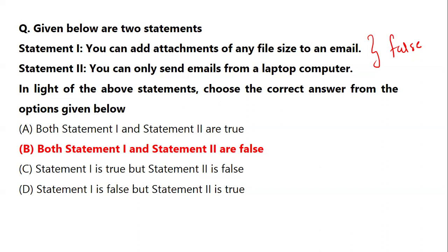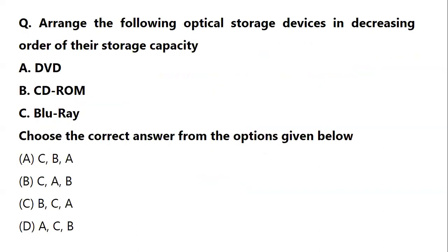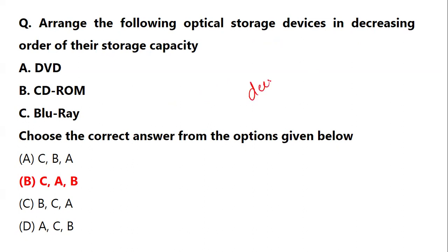Next: arrange the optical storage devices in decreasing order of storage capacity. Storage capacity questions are very important. You have to be clear whether the question asks for decreasing or increasing order. Going with decreasing order, it is Blu-ray, followed by DVD, followed by CD. This is the order going from highest to lowest storage capacity.